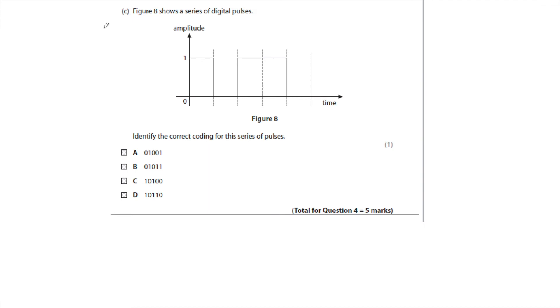So, nice easy one here. It says, identify the correct coding for the series of pulses. Well, that's 1, 0, 1, 1, 0. So it is D.